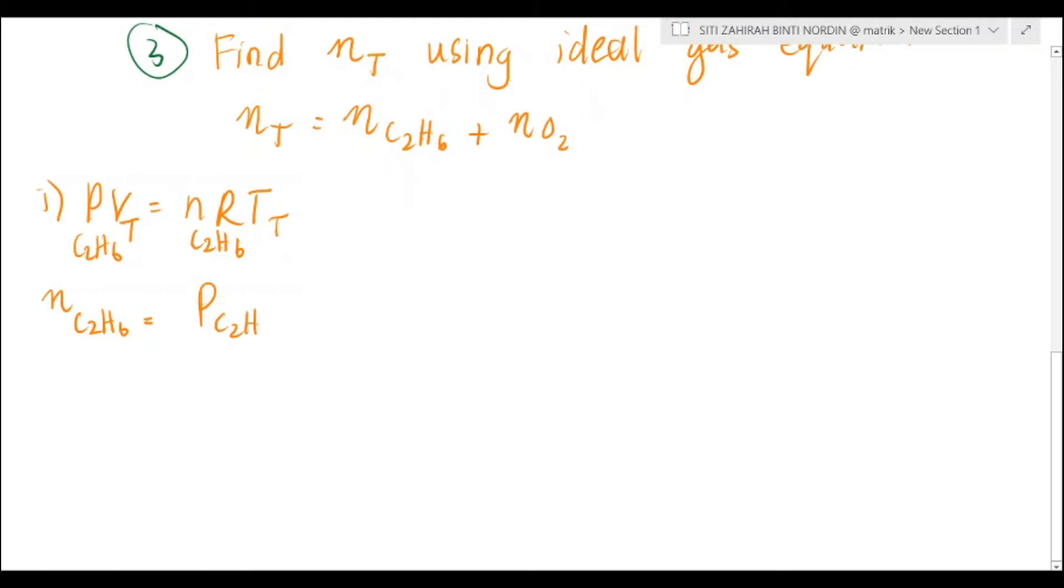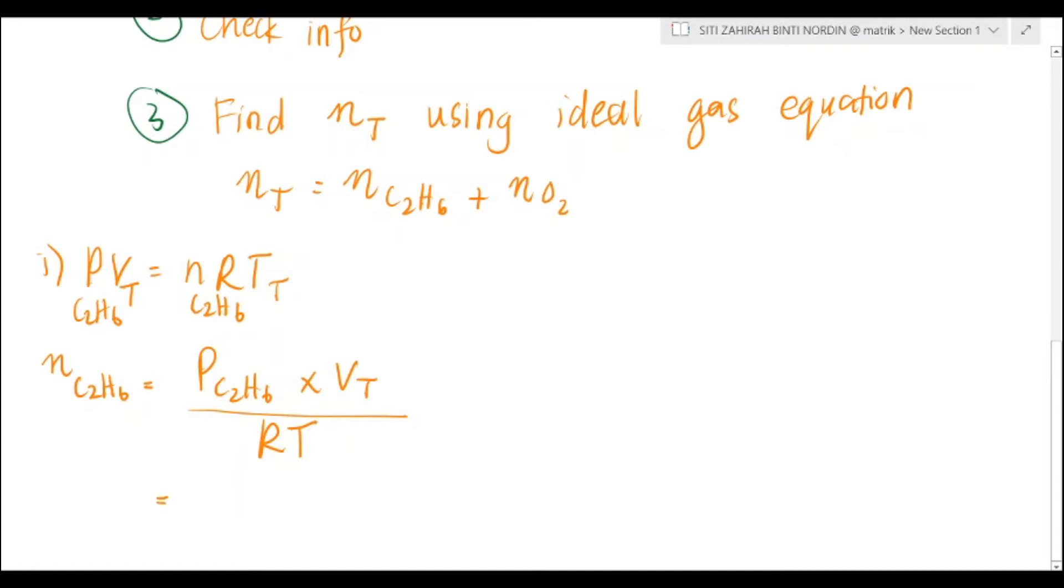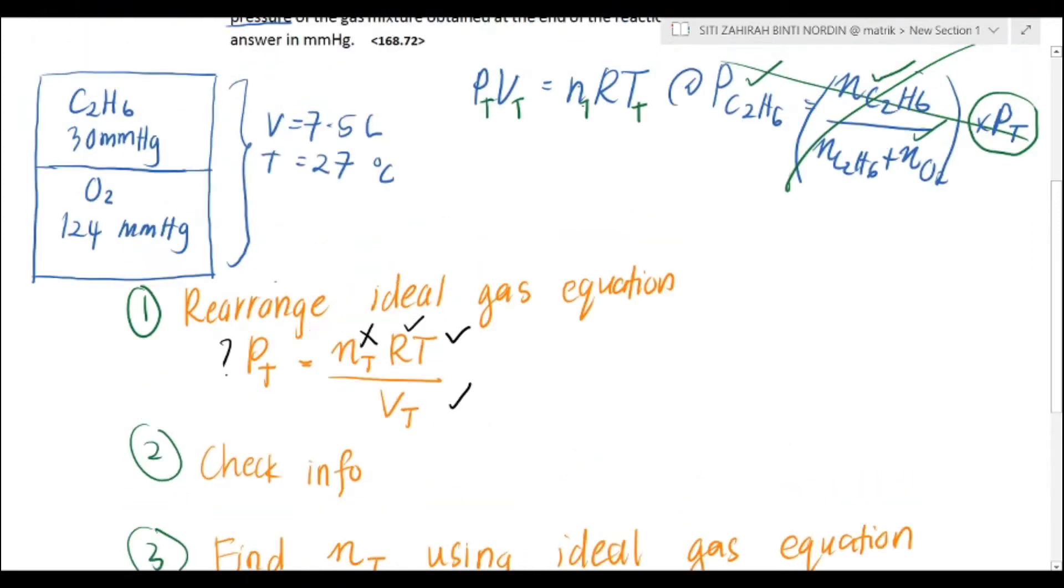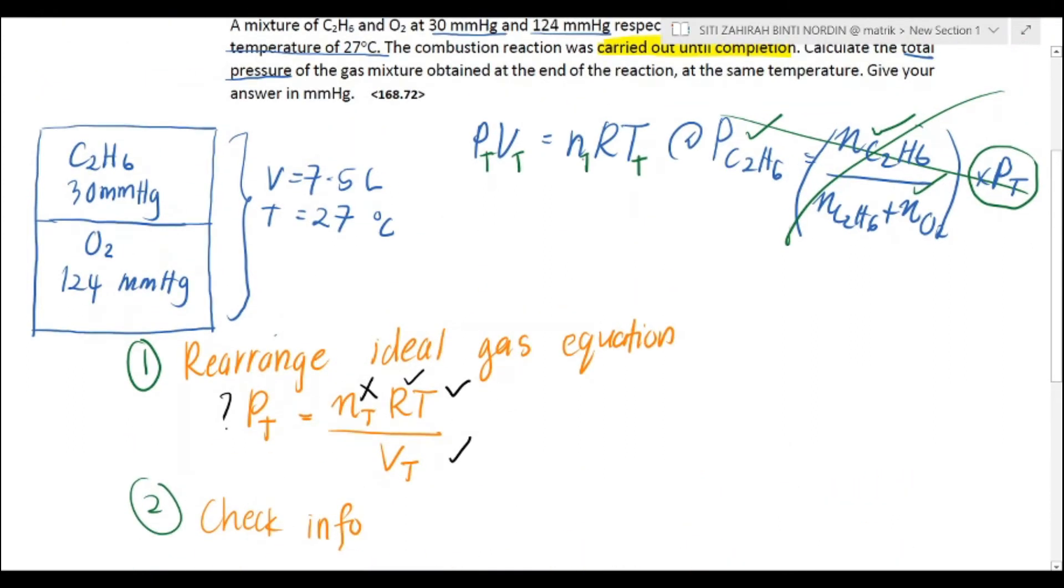Mol C2H6 is equal to pressure C2H6 times volume total divided by RT. Pressure C2H6, do we have it? Yes. But remember class, your pressure must be in atm. The question gives you the pressure in mmHg, so you need to convert both of the pressures given into atm.